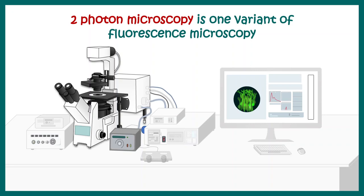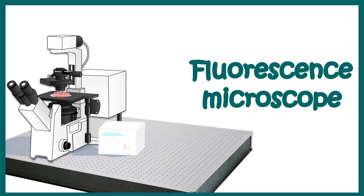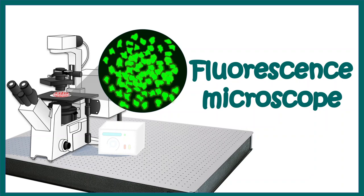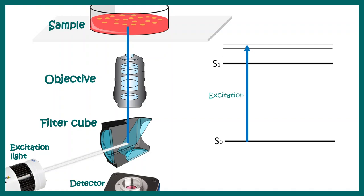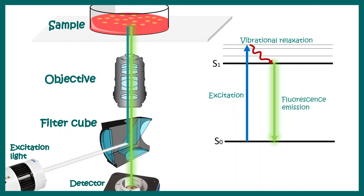Two photon microscope is one variant of fluorescence microscopy, meaning fluorescence light is used for imaging. Now let us appreciate the variations from a fluorescence microscope. Here is our overview: excitation light passes through a filter cube, illuminating the fluorescence specimen. The emitted fluorescent light returns back through the objective and reaches the detector. The excitation light allows the electron to jump into an excited state, and later it relaxes, giving us a fluorescence emission, detected by a camera, photomultiplier tube, etc.